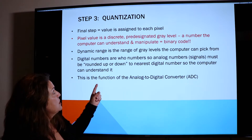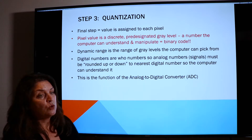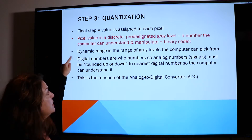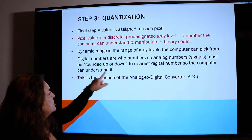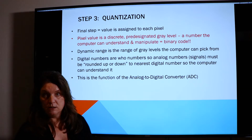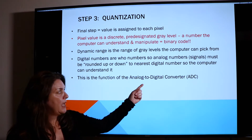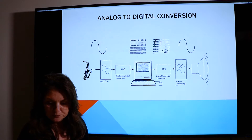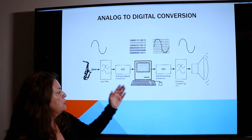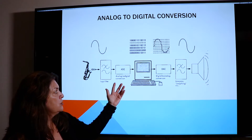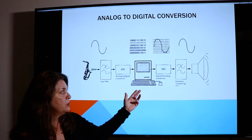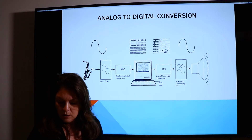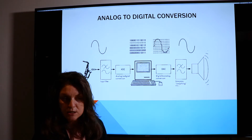The real work happens in quantization — this is the final step where each pixel is assigned a binary number, and that determines the dynamic range. This is where the rounding up or down happens for that digital number, and this is the function of the analog-to-digital converter. The analog-to-digital converter happens before it goes into your computer. Then, in order for you to see it on a monitor, it has to be converted back into an analog signal so that it can be projected onto the monitor.